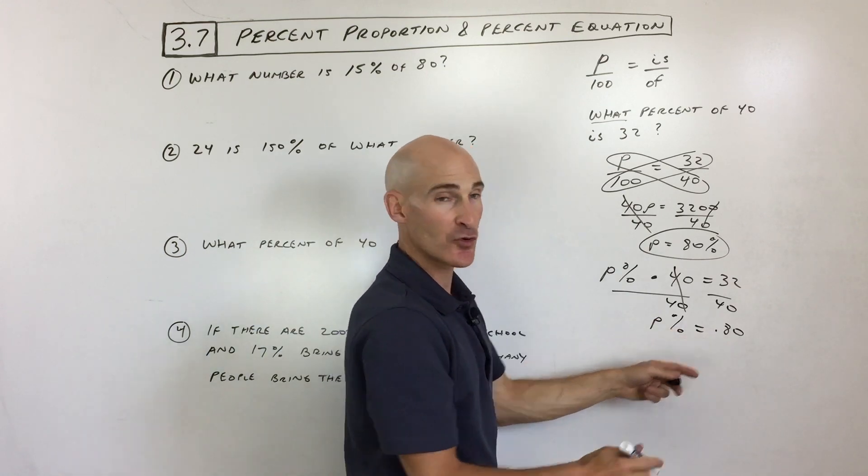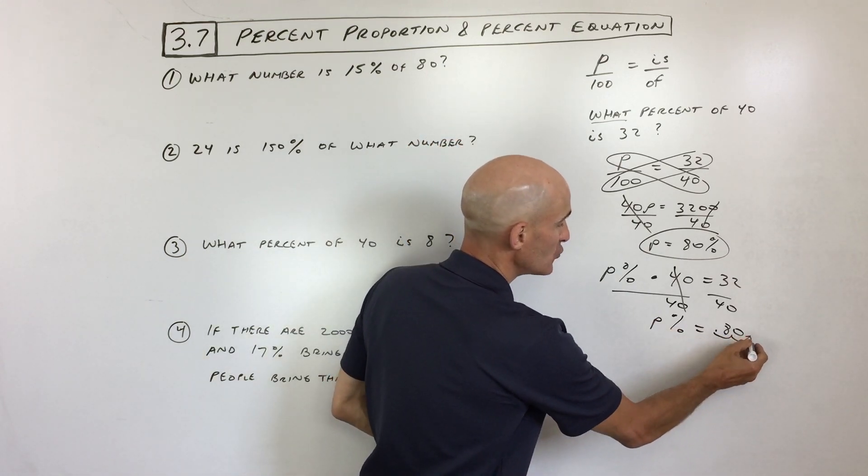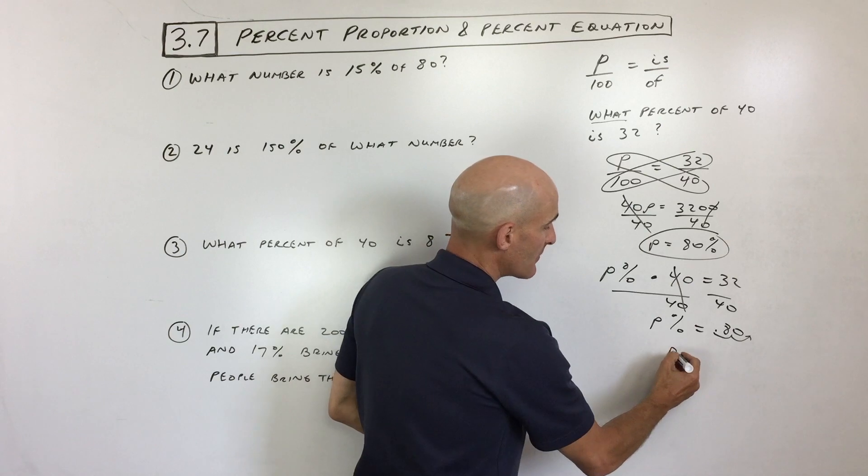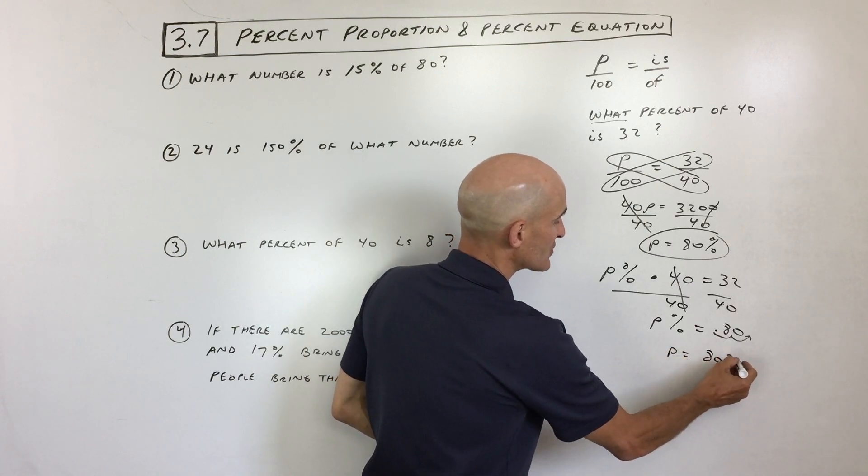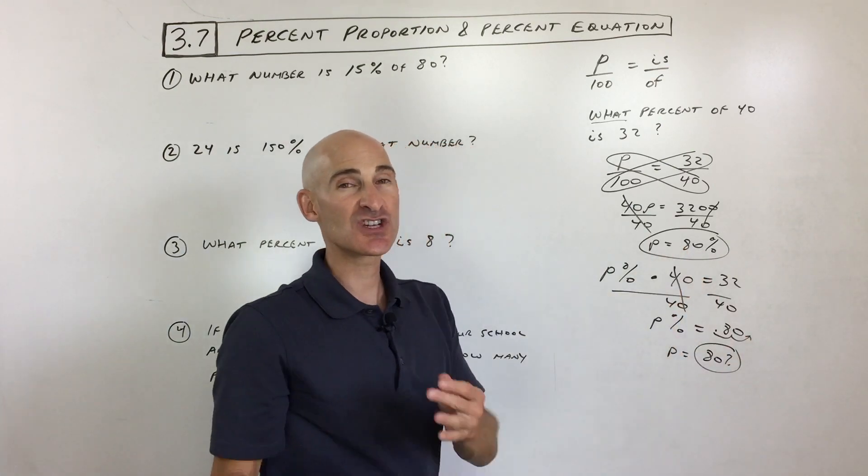So to convert from a decimal to a percent, you have to move that decimal point two places to the right. So that means the percentage is going to be 80%. Same thing we got up here. Just a different way of doing it.